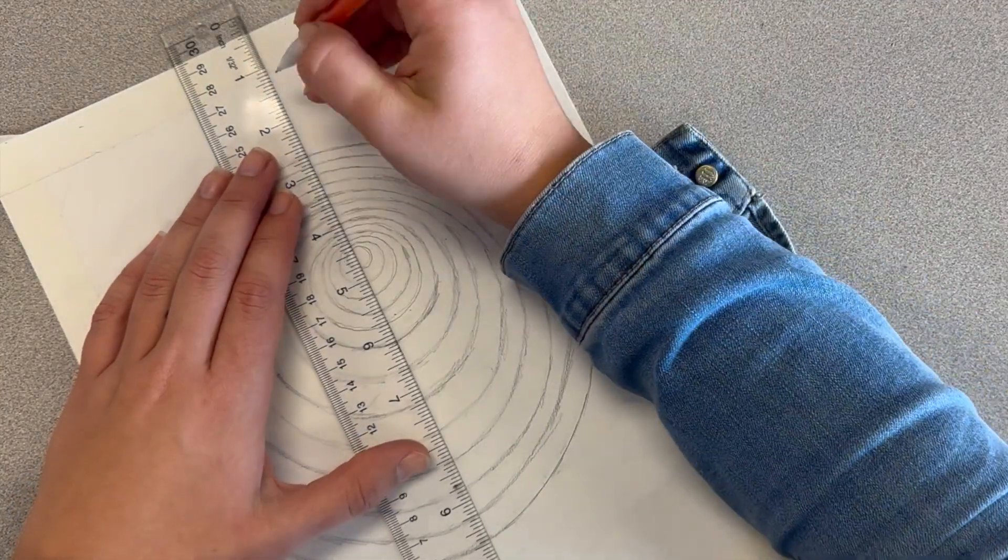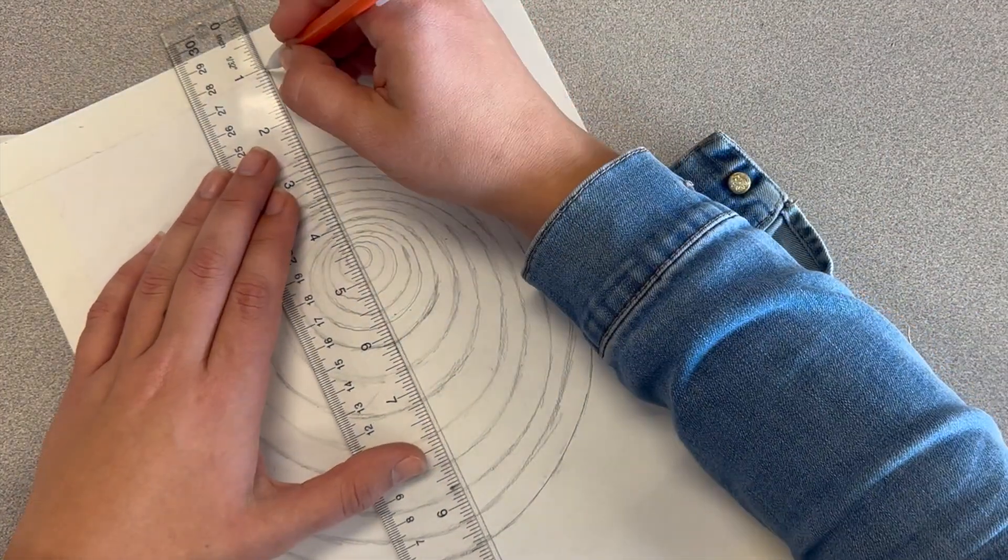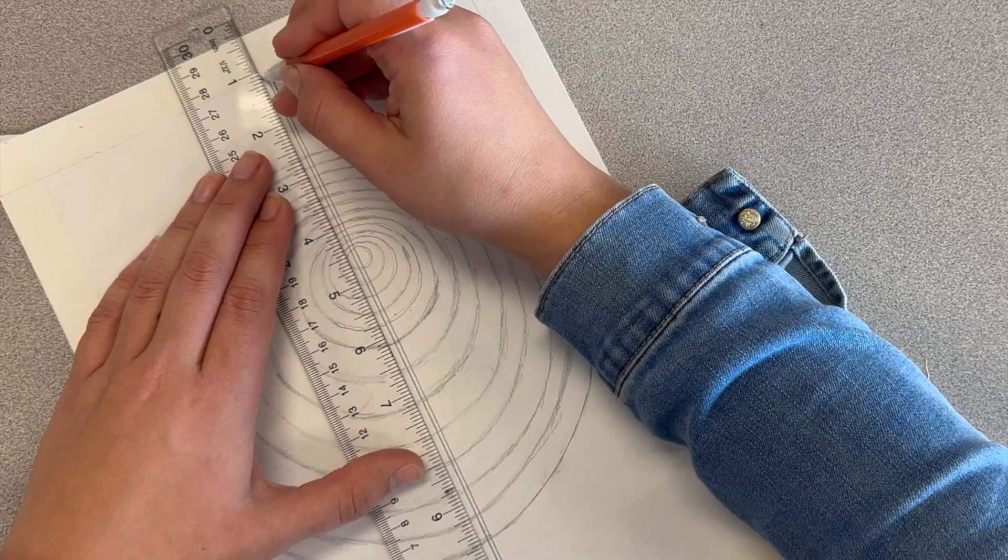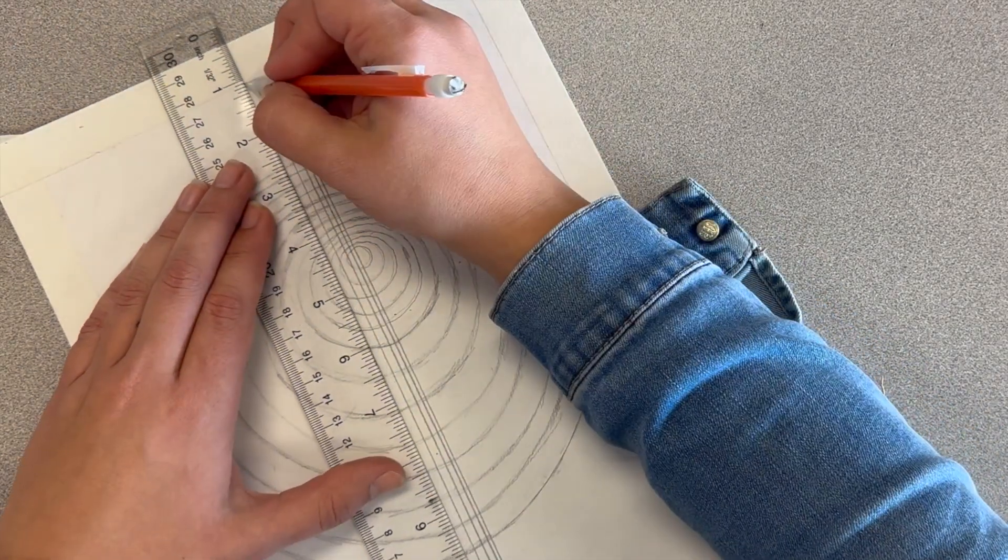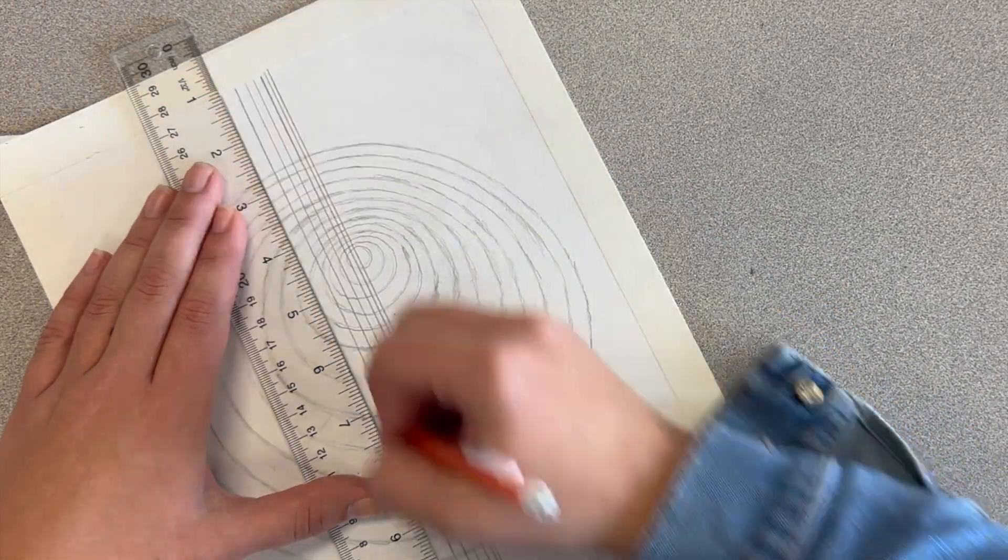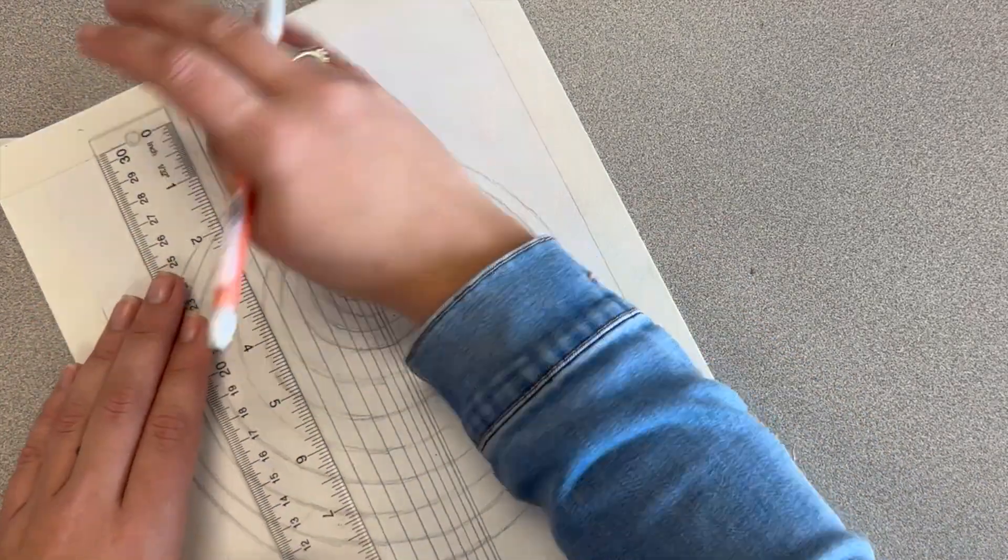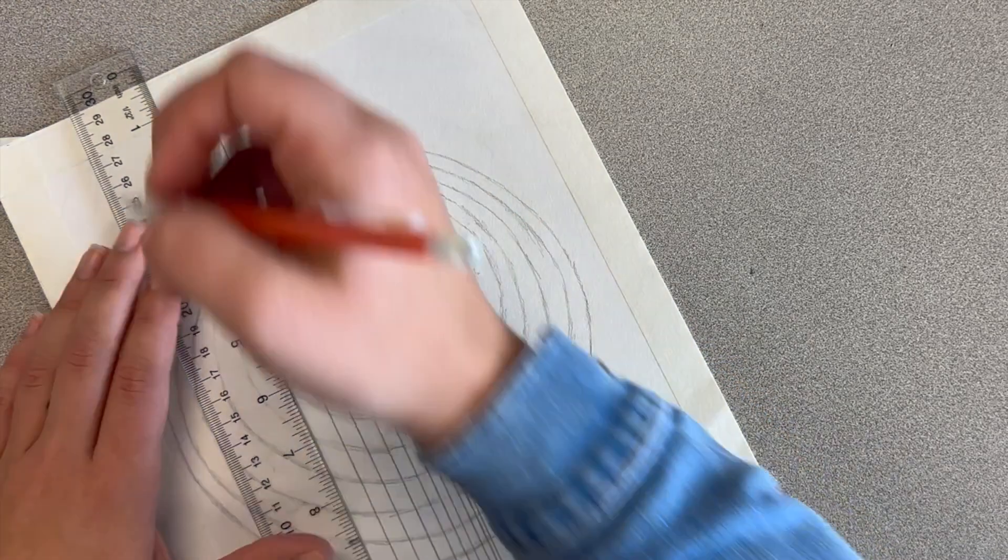Once you're ready for your lines, you're going to grab your ruler and lay it across the center point of your circle. You can draw your lines horizontally or vertically, but just choose one direction. Every line that you make is going to get a little bit farther apart. So at your center point, you're going to make a line,